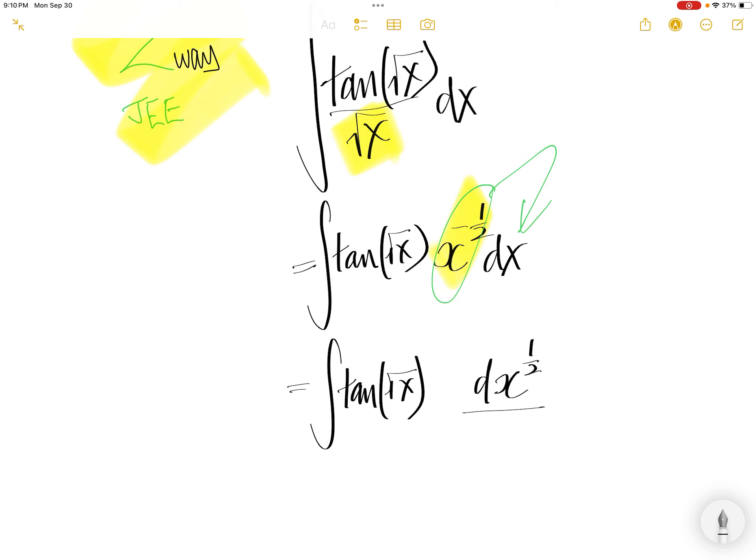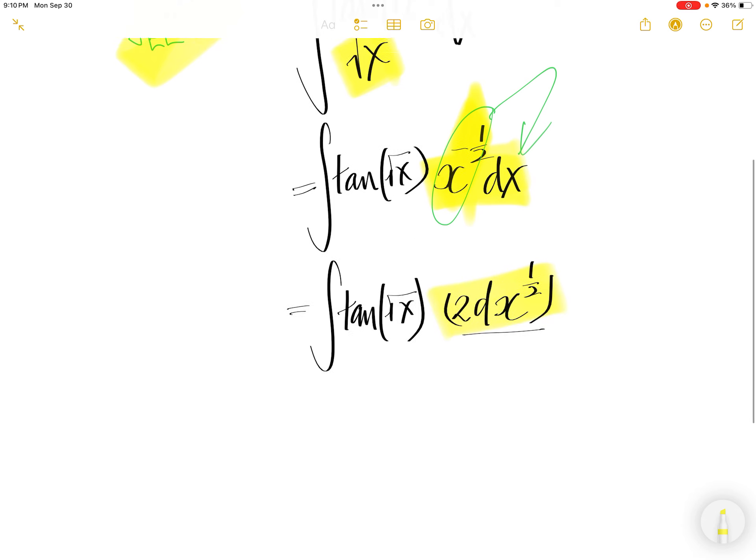Then you take the derivative of this. Half comes down, cancels with the two, and then half minus one is negative half. So basically this yellow thing is equal to that.